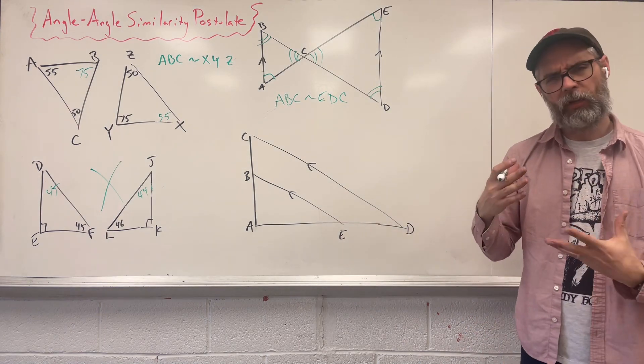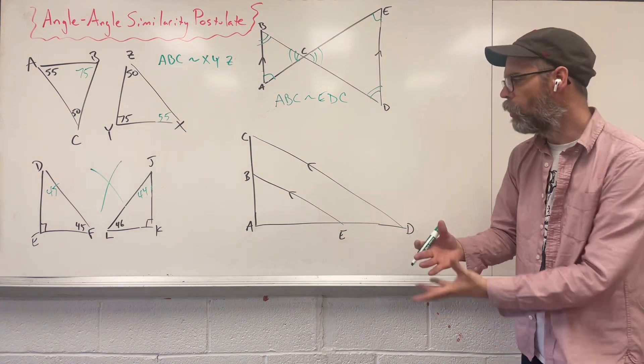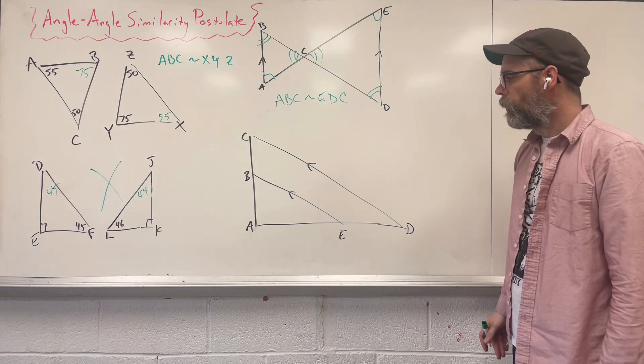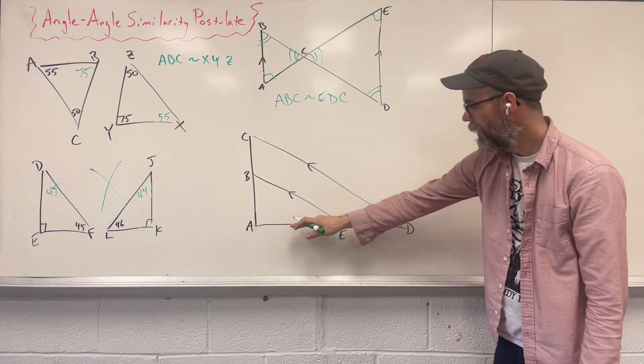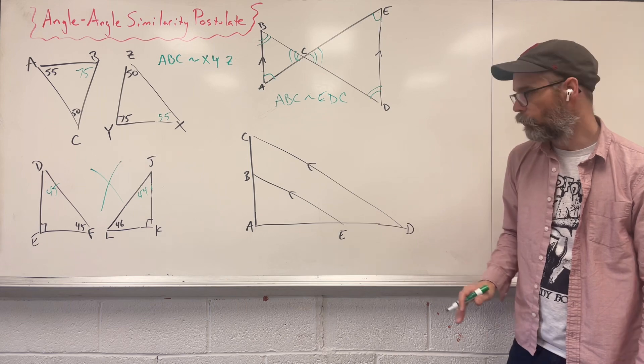Bottom one, we have kind of like a triangle within a triangle, small one and a large one. Parallel lines again, and again, we have a transversal that cuts through them.